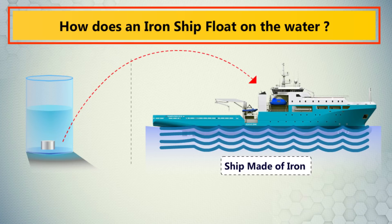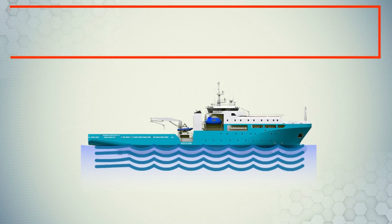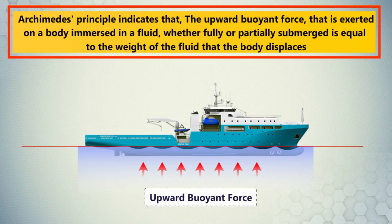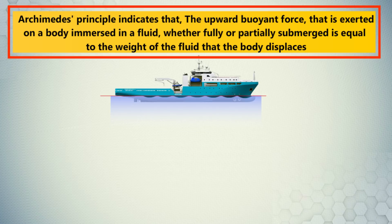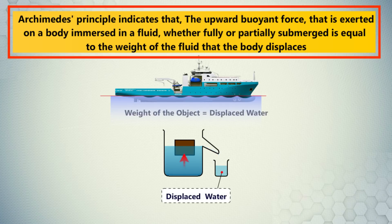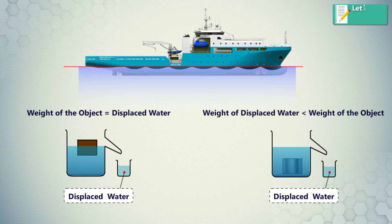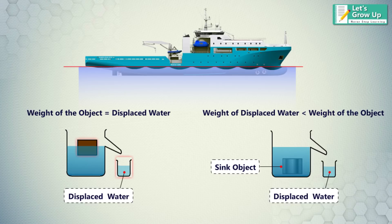The standard definition of floating was first recorded by Archimedes. The Archimedes principle indicates that the upward buoyant force exerted on a body immersed in a fluid, whether fully or partially submerged, is equal to the weight of the fluid that the body displaces. If the weight of the water displaced is less than the weight of the object, the object will sink; otherwise the object will float.